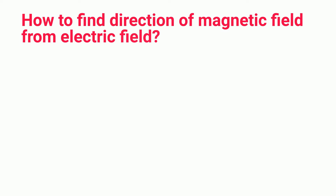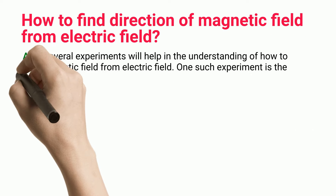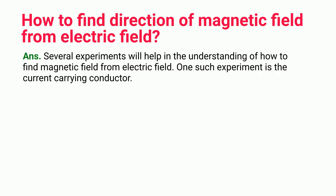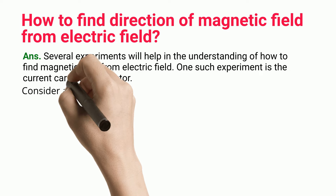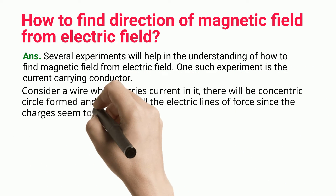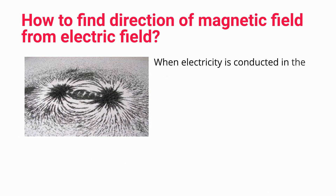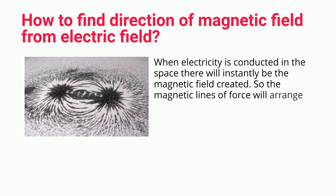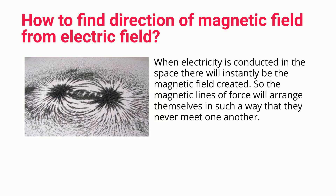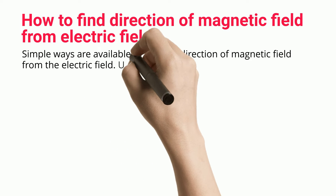How to find the direction of magnetic field from electric field — several experiments will help in understanding this. One such experiment is the current-carrying conductor. Consider a wire which carries current; there will be concentric circles formed around it, which we call the lines of force. When electricity is conducted in the space, the magnetic field is instantly created, and the magnetic lines of force arrange themselves so they never meet one another.